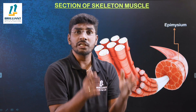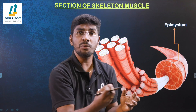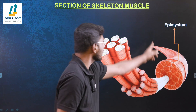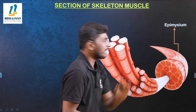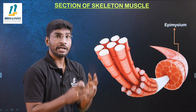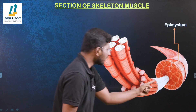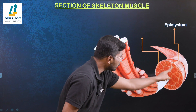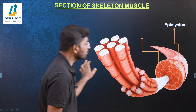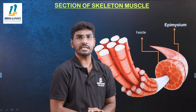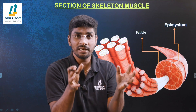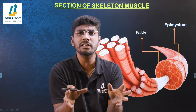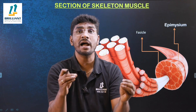The connective tissue membrane surrounding the outermost layer of the muscle is called epimysium. If you look closely inside the muscle, there are small bundles present. These small bundles are called fascicles. That means the skeletal muscle is formed by the fusion of many small bundles called fascicles.